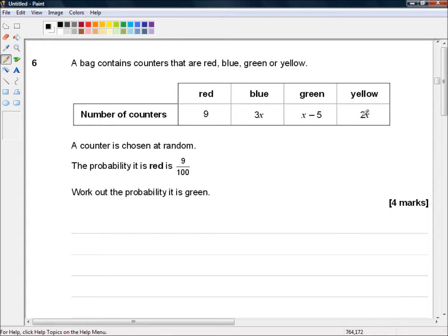Well, we know that all of this add up to 100, so let's write this out. 9 plus 3x plus x minus 5 plus 2x equals 100.